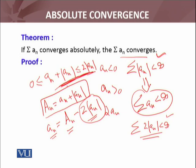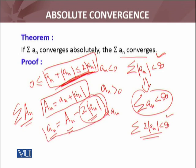What about the series corresponding to capital Aₙ? Because this inequality is true, using the comparison test, the larger series is convergent, so I can conclude that Σ Aₙ is also convergent by comparison test. From this relationship, two series are convergent: Aₙ and 2|aₙ|. The sum or difference of convergent series is also convergent, so this is the difference of two convergent series. Hence, Σaₙ is convergent, which was my target.